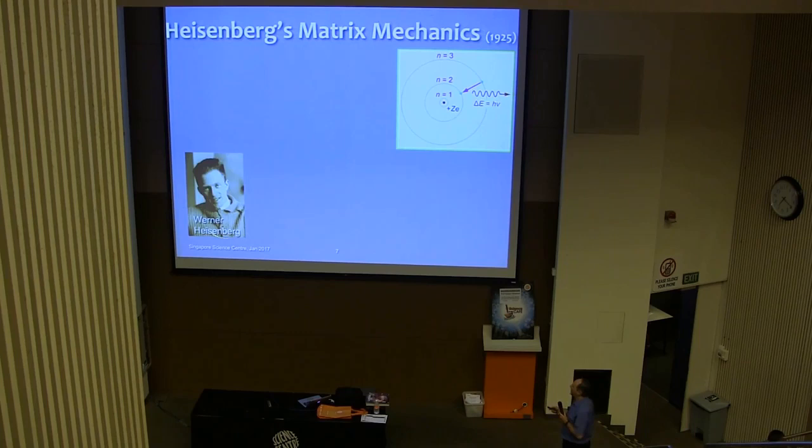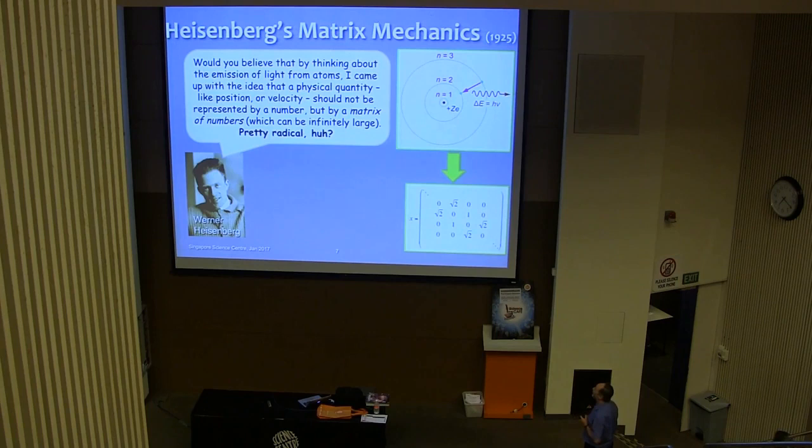There was some quantum physics before that time. People knew about atoms and that they had energy levels and that electrons could jump between them. But what Heisenberg wanted to do is to really understand how this happened. And so here he is explaining, so would you believe that by thinking about the emission of light from atoms, I came up with the idea that a physical quantity, like position or velocity, should not be represented by a number, but should be represented by a matrix of numbers, in fact, a matrix which can be infinitely large.